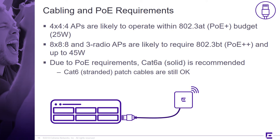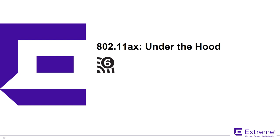Regarding cabling and PoE requirements: 11ax is going to introduce high power budget requirements. 4x4 APs are likely to operate within the 802.3at PoE+ budget — about 25 watts usable out of a 30-watt budget — but that's for two-radio units. Once you get into three- or four-radio units or 8x8 configurations, you'll need a much bigger budget. 802.3bt Class 3 runs about 60 watts and Class 4 up to about 90 watts. We expect some three-radio and 8x8 APs to require 45 to 50 watts. That much power heats up the cable, so consider Cat 6a or even dual Cat 6a in your walls. This concludes video 4 — thank you for attending, and if you have any questions be sure to send them our way.